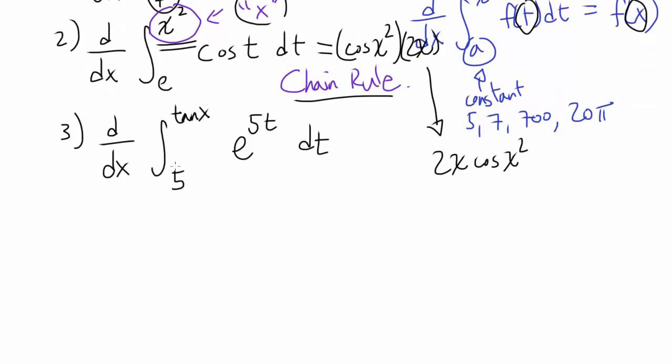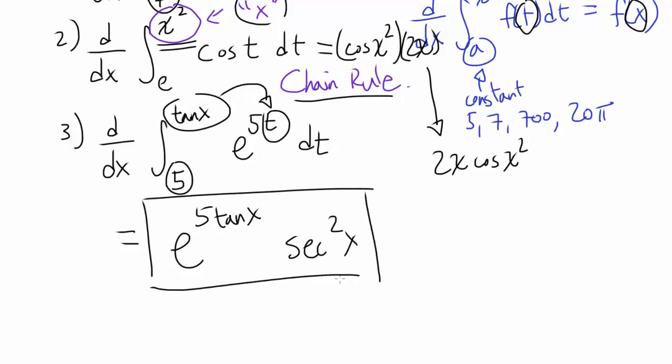Derivative with respect to x of the integral from 5 to tangent of x of e to the 5t dt. Same thing: treat tangent of x as being x. Substitute that into t, so you get e to the 5 times tangent of x. You're going to differentiate tangent of x, which is secant squared of x, and multiply by that. So that's our answer for the last one.